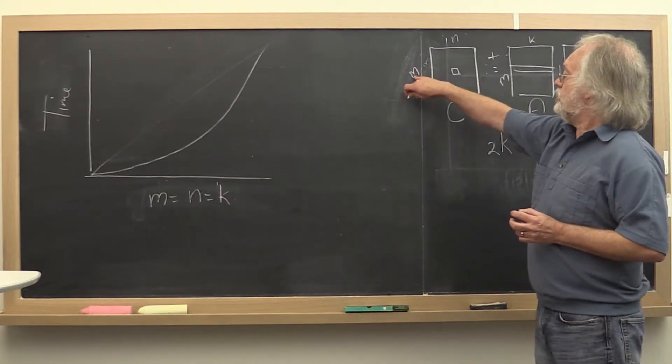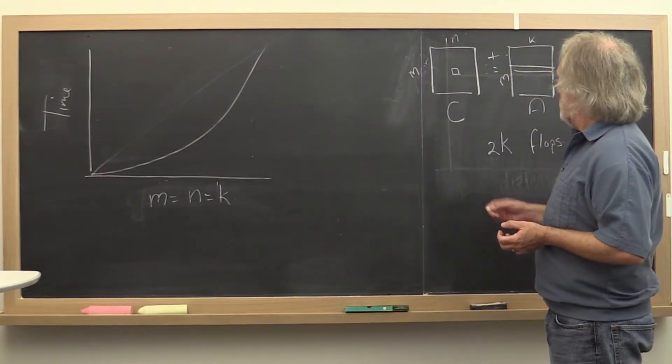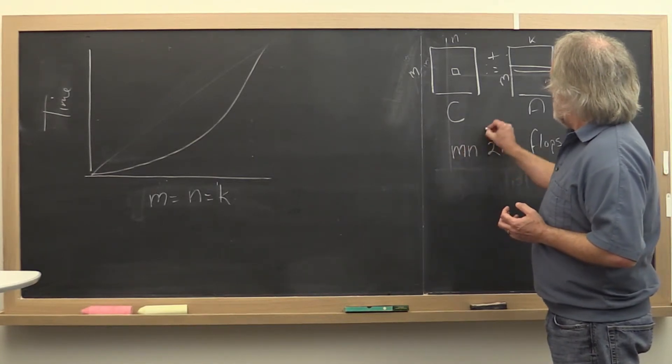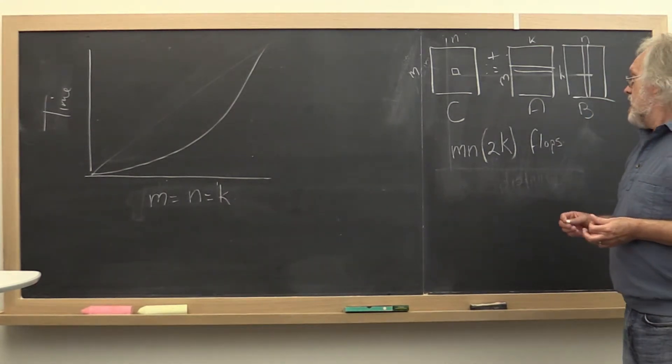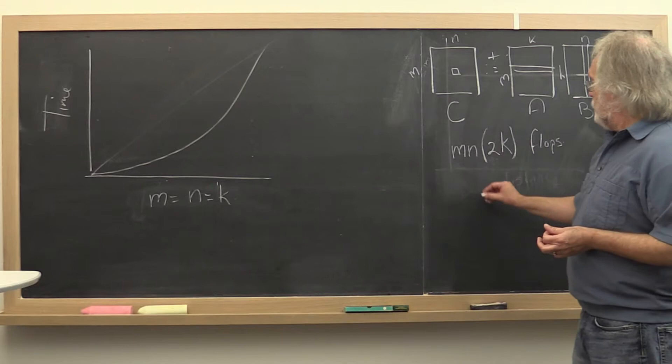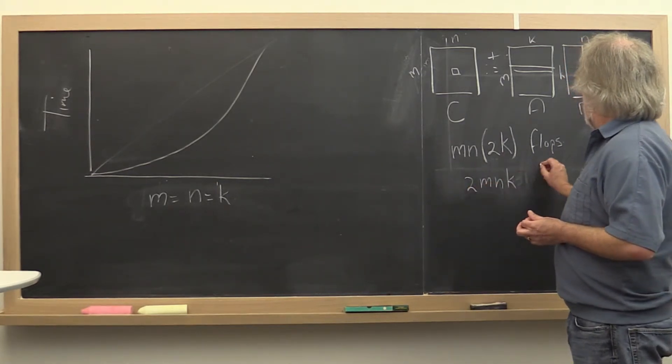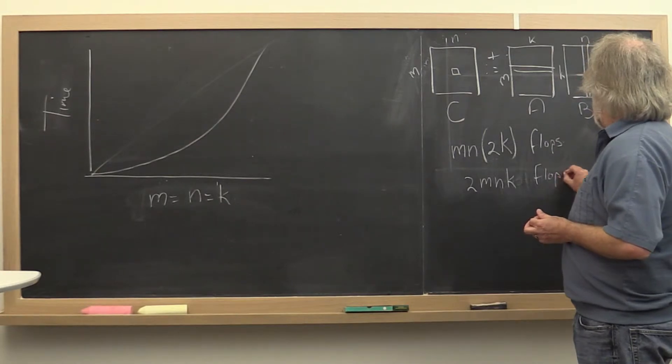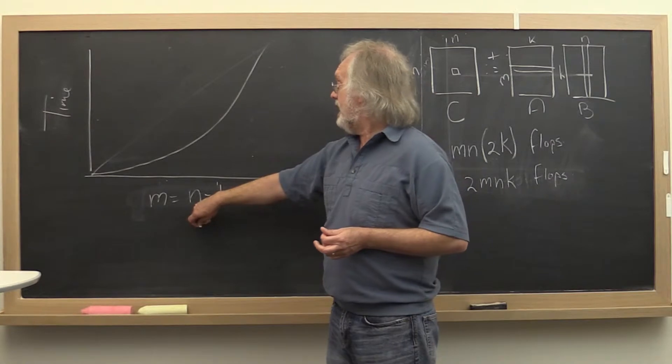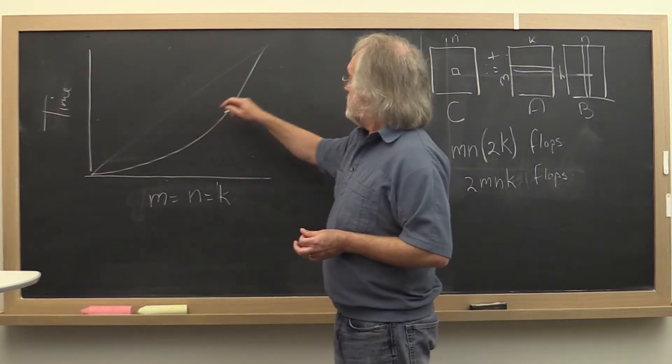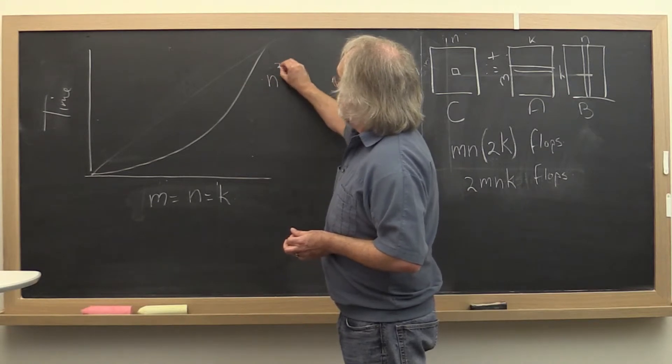But we have to compute M times N entries in C, or rather we need to update them. So we need to do M times N times 2k floating-point operations. And of course we can rearrange that and we get 2 times M times N times k flops. And then if M is equal to N is equal to k and we parameterize it by N, then we would expect time to be proportional to N cubed.